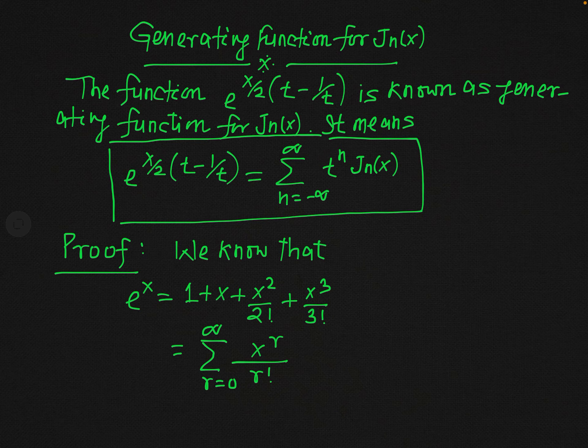First we will see the proof of this theorem, and after that we will explain it by taking some important examples in another lecture. To prove it, recall that e raised to the power x is defined as 1 plus x plus x squared over 2 factorial plus x cubed over 3 factorial and so on. In compact form, this is the summation from r equals 0 to infinity of x raised to the power r over r factorial.